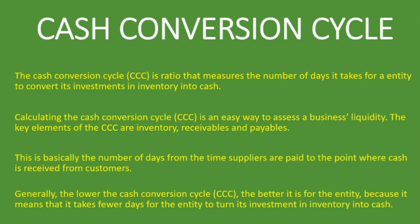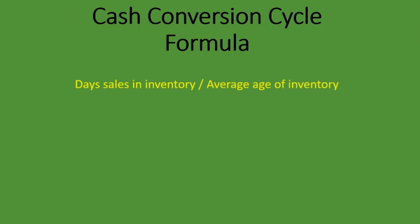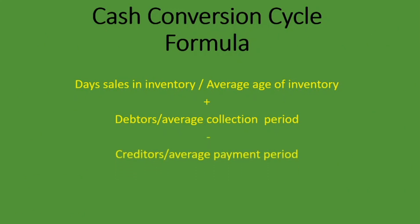The formula for the cash conversion cycle is: Days Sales in Inventory, plus your Debtors (average collection period), minus your Creditors (average payment period). Days Sales in Inventory and average age of inventory are used interchangeably. We did individual lessons on all three elements — links are in the description below, covering the formula, calculation, and how to interpret these ratios.